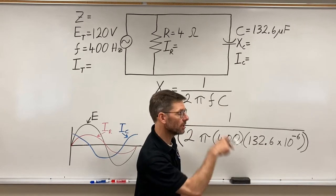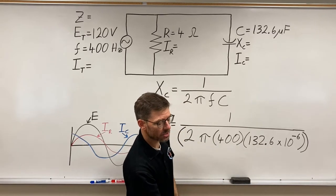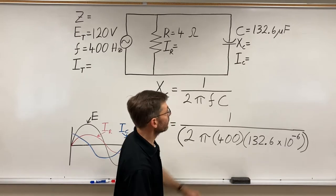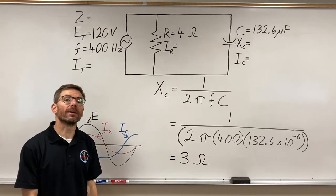second function, double E minus 6. The little negative with the parentheses around it. And what do we come up with? 3 ohms.